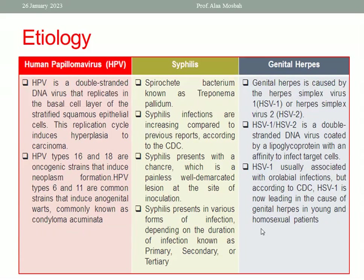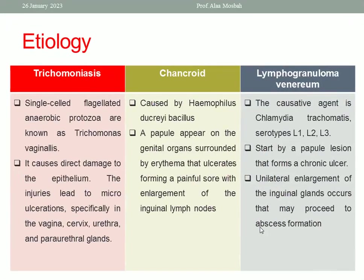Let us go to genital herpes. Genital herpes is caused by herpes simplex virus type 1 and type 2 — a double-stranded DNA virus coated by lipoglycoprotein with an affinity to infect target cells. HSV-1 is usually associated with oral-labial infection, but according to the CDC, HSV-1 is now a leading cause of genital herpes in young and homosexual patients, so genital herpes can be caused by HSV-1 or HSV-2.